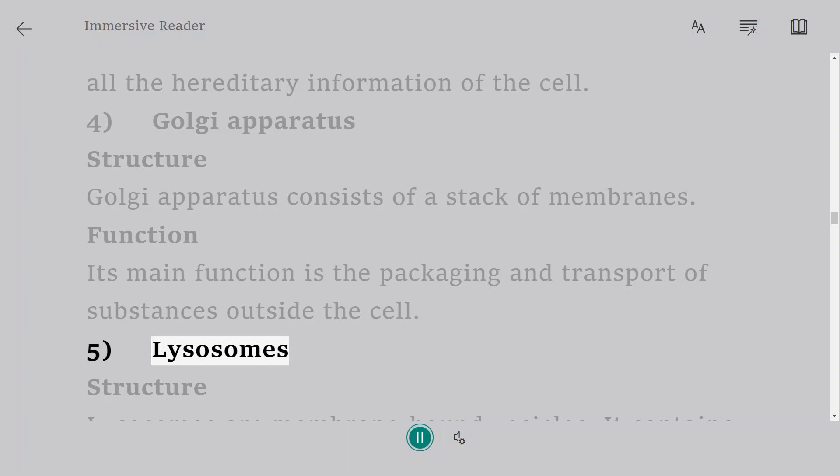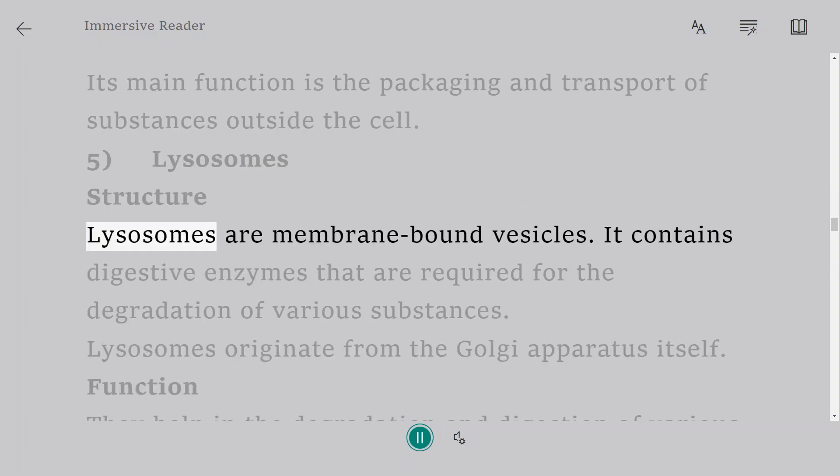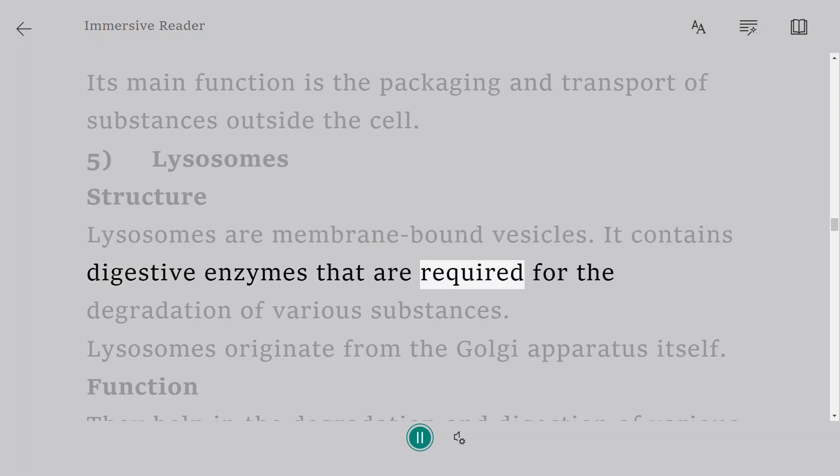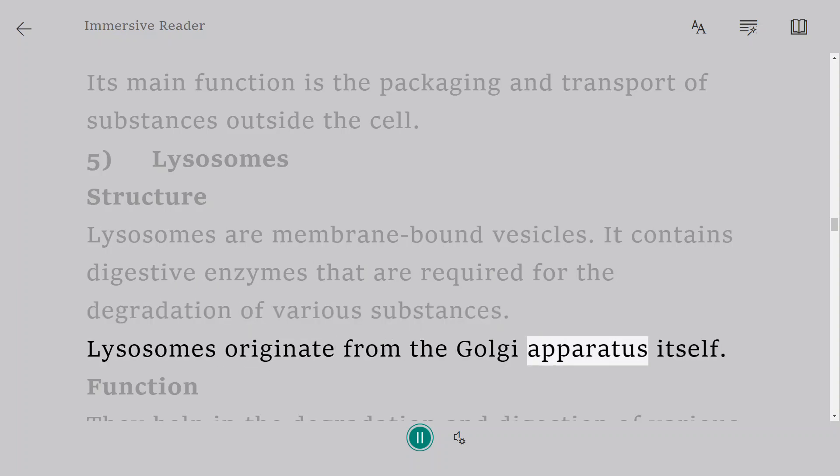5. Lysosomes. Structure: Lysosomes are membrane-bound vesicles. It contains digestive enzymes that are required for the degradation of various substances. Lysosomes originate from the Golgi apparatus itself.